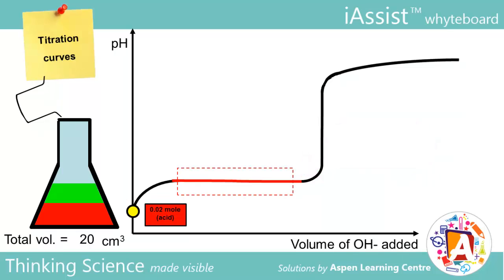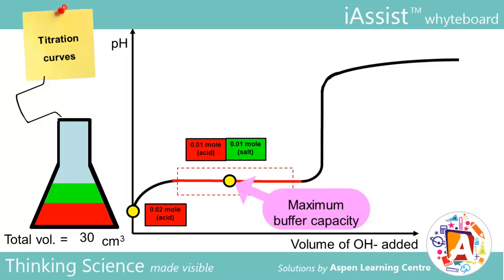When exactly 10 cm³ of NaOH is added, there are 0.01 moles of weak acid and 0.01 moles of salt. We refer to this as the maximum buffering capacity, wherein the solution raises equal amounts of H⁺ and OH⁻.